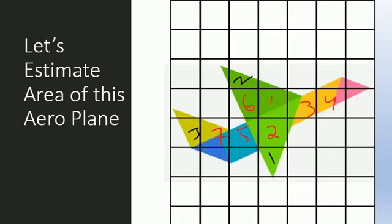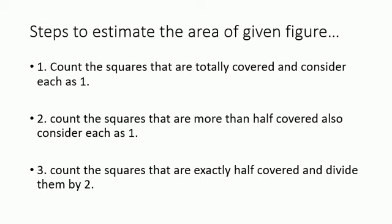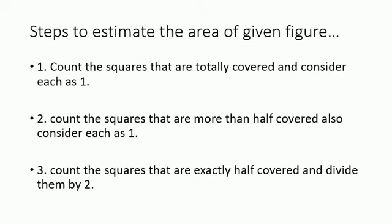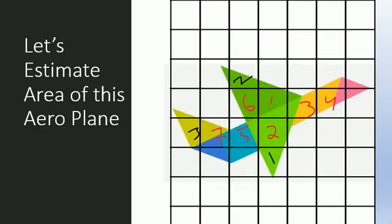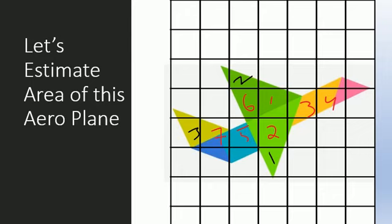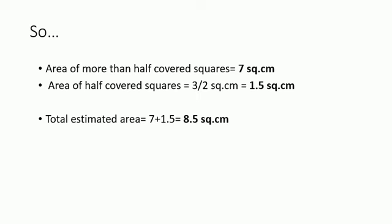Now let's estimate the area of this airplane. First, we follow step one — finding totally covered squares — but in this figure there are no squares that are totally covered. So we move to step two: more than half covered squares. There are seven squares that are more than half covered. For step three, looking at the figure, there are only three squares that are exactly half covered.